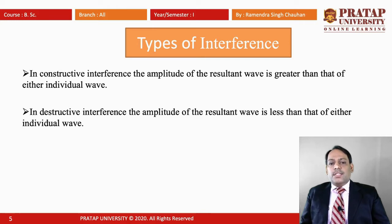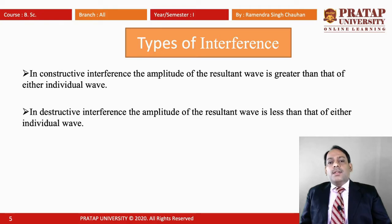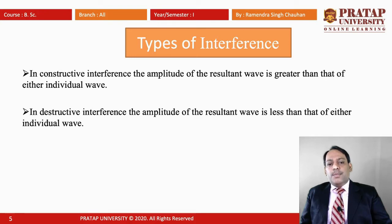When Destructive Interference is taking place, one wave has amplitude A in one direction, that is plus A, and the other wave has amplitude A in the opposite direction, that is minus A. The two waves are in opposite phase with the same amplitude. When we add plus A and minus A, we get zero. This is the special case when the amplitudes are the same. When they are not the same, we will have some resultant value, but that value will be less than the amplitude of either individual wave.